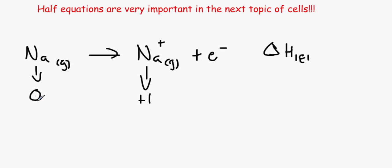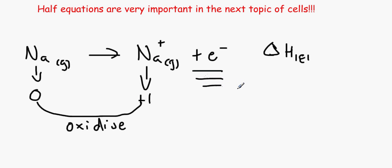Therefore we can see that sodium has been oxidized, because we have lost an electron — it's not in here anymore. So it has been oxidized. We have lost an electron and the sodium is now happier, therefore it is +1.